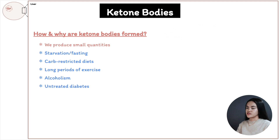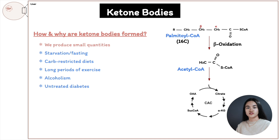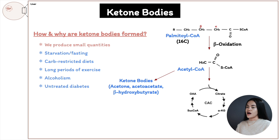When we break down fatty acids through beta-oxidation, we produce acetyl-CoA. The acetyl-CoA can either enter the citric acid cycle, where it's oxidized to carbon dioxide and water to yield energy, and the citric acid cycle intermediates can be diverted to gluconeogenesis — producing glucose from non-carbohydrate sources — or acetyl-CoA can be converted to ketone bodies in the liver: acetone, acetoacetate, or beta-hydroxybutyrate.